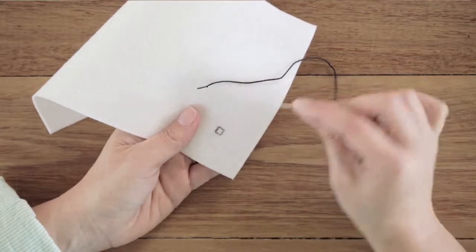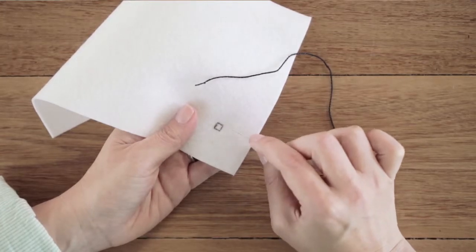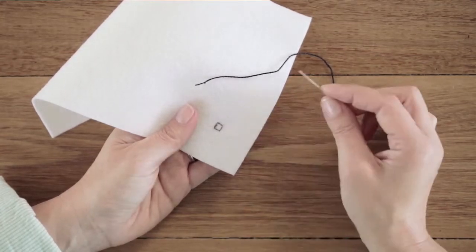This is satin stitch. It's great if you want to fill an area like this square here. You might be doing an eye or another area on a softie.